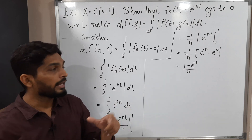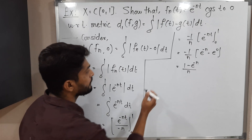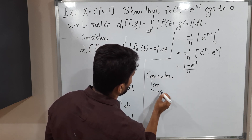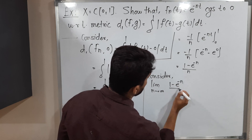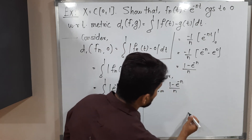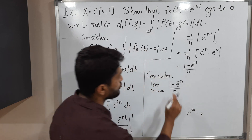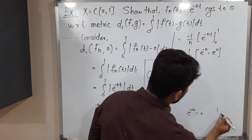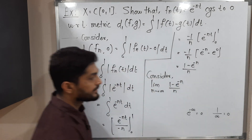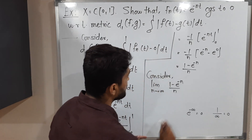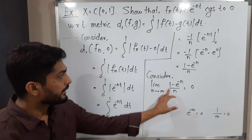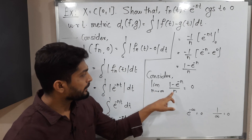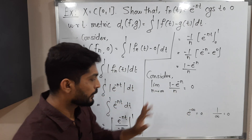Let us see what will happen if we apply the limit as n tends to infinity. We get the limit of (1 minus e raised to minus n) upon n. Now, e raised to minus infinity is 0, so at the numerator we have 1 minus 0 = 1. At the denominator, n goes to infinity, so 1 upon infinity is 0. So finally, we get the value 0.